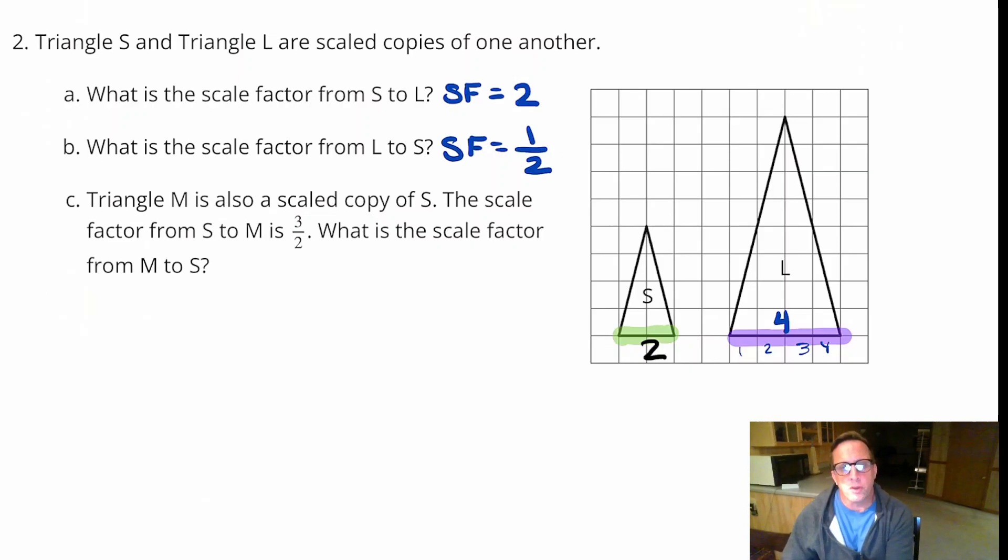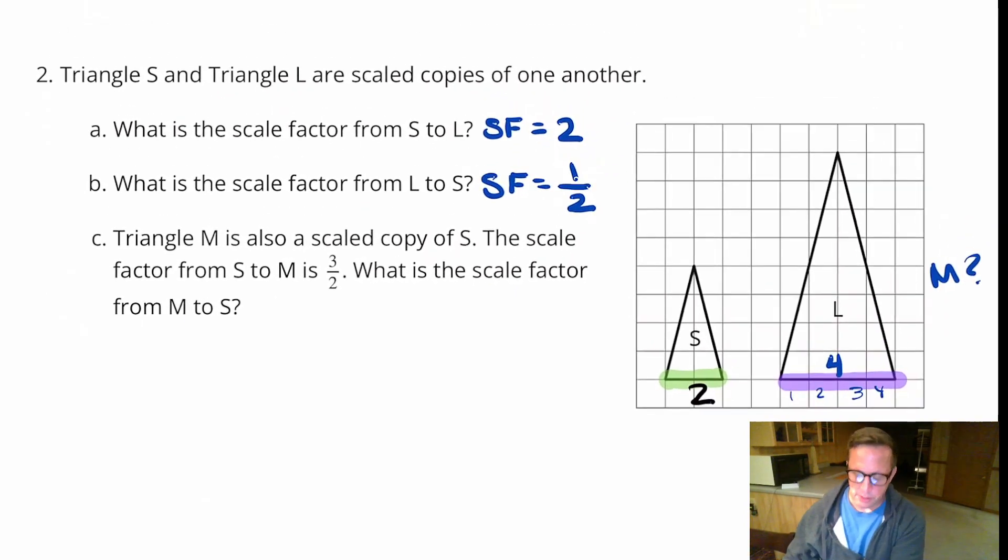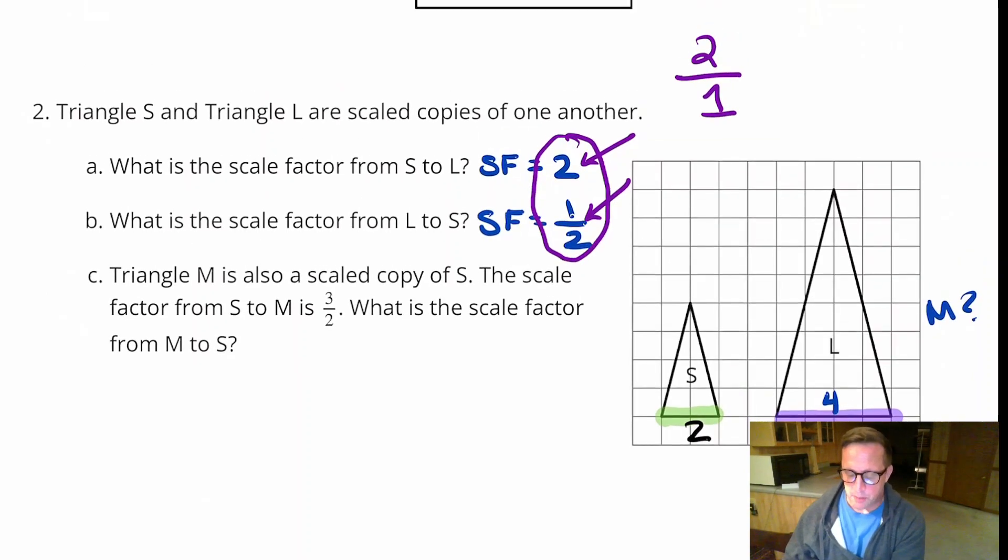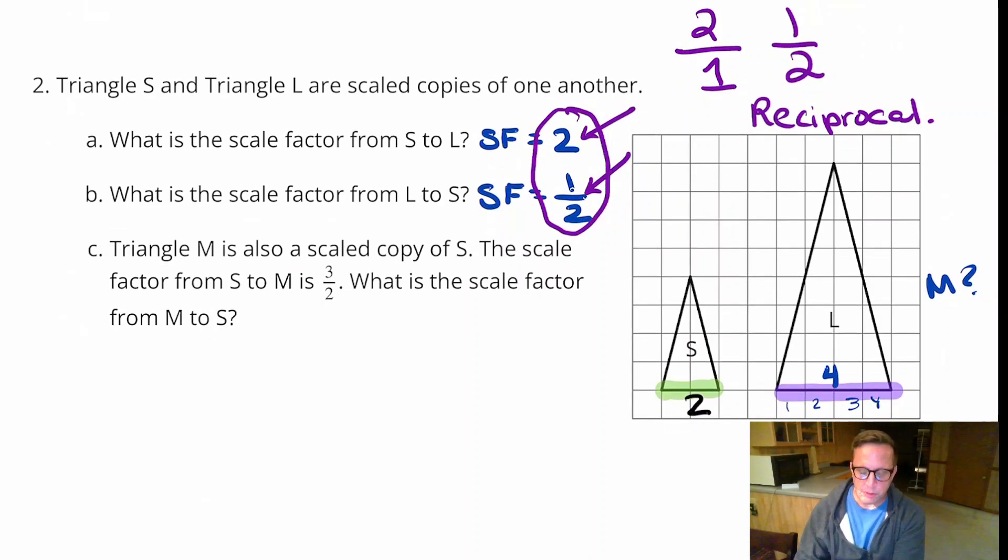For triangle M, triangle M is also a scaled copy of S. Where is M? It's in our heads, it's in our imagination, it doesn't really exist. The scale factor from S to M is 3 halves, 3 over 2. What is the scale factor from M to S? Now what this problem is basically making you do is see the connection here between these numbers. You'll notice that 2, when you flip it, you end up with 1 half. Because 2 as a fraction you can write as 2 over 1, and then when you flip that, that becomes 1 over 2. That's called reciprocal. There's a reciprocal relationship there when you go both ways. So the same is going to be true for 3 halves. So 3 halves is going to flip and go to 2 thirds. So there's your scale factor, 2 thirds.